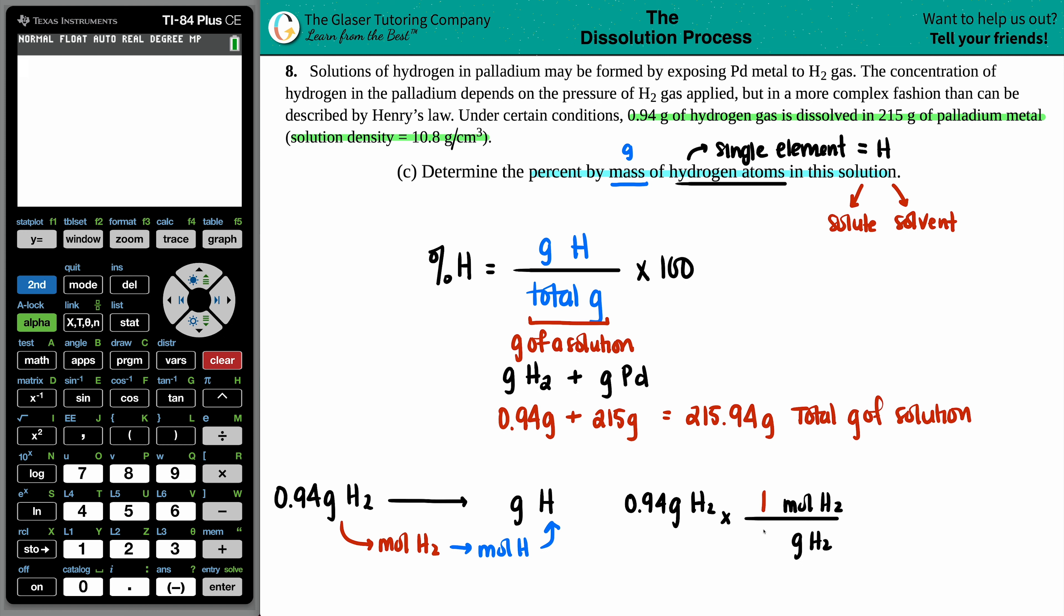One mole of H2, this is from the periodic table, will equal whatever the mass is. There's two hydrogens, and on my periodic table, it looks like one hydrogen is 1.008. So if I just take that, and I times it by 2, I get 2.016. And the grams of H2 cancel.